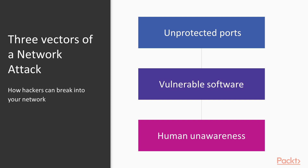Now let's talk about the three vectors of a network attack. Hackers can break into your network in three ways. First of all, it's unprotected ports. An unprotected port is like an unclosed door of your house — all a hacker has to do to get into your network is connect through that unclosed port.